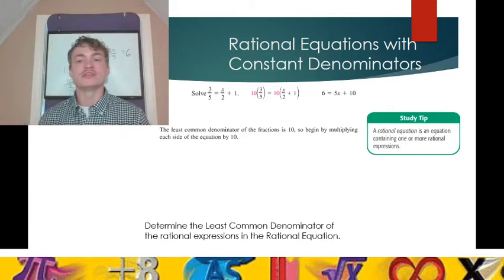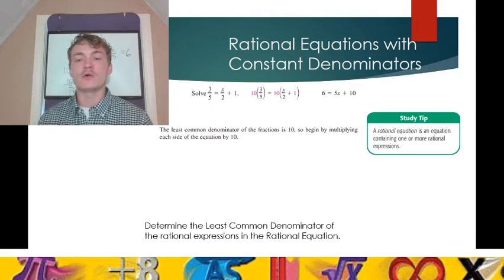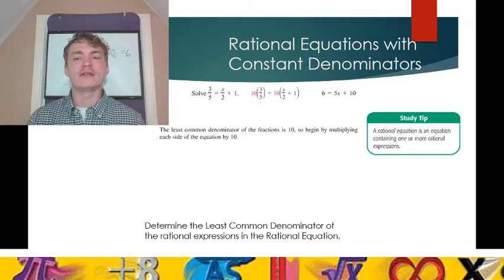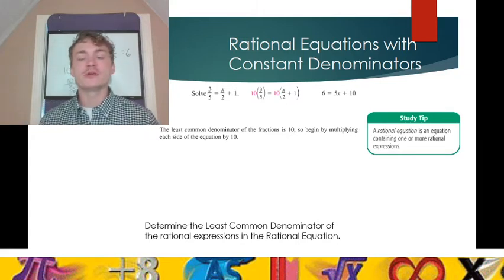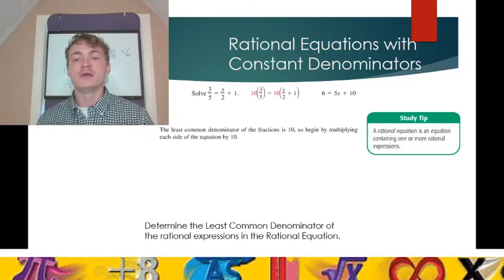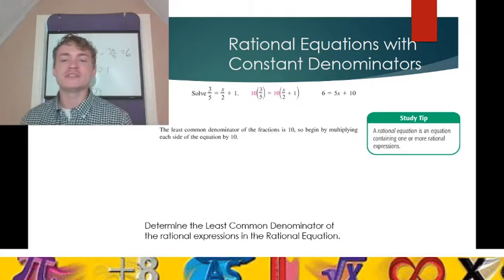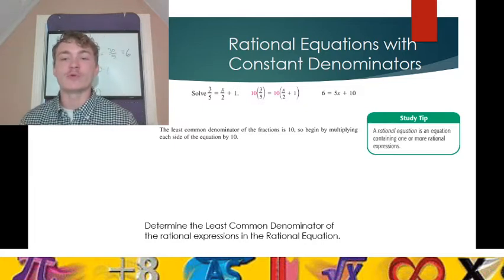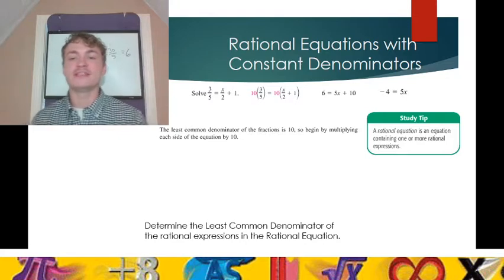This is a linear equation — the variable x has an exponent of 1, making this a first-degree polynomial equation. To solve, we isolate x. There are three terms: 6, 5x, and 10. Only one has the variable; the other two, 6 and 10, are constants. They are on opposite sides of the equation, so we cannot combine them directly. We subtract 10 from each side: 6 minus 10 is negative 4, and 5x plus 10 minus 10 is simply 5x. So negative 4 equals 5x; dividing by 5, x equals negative 4/5.